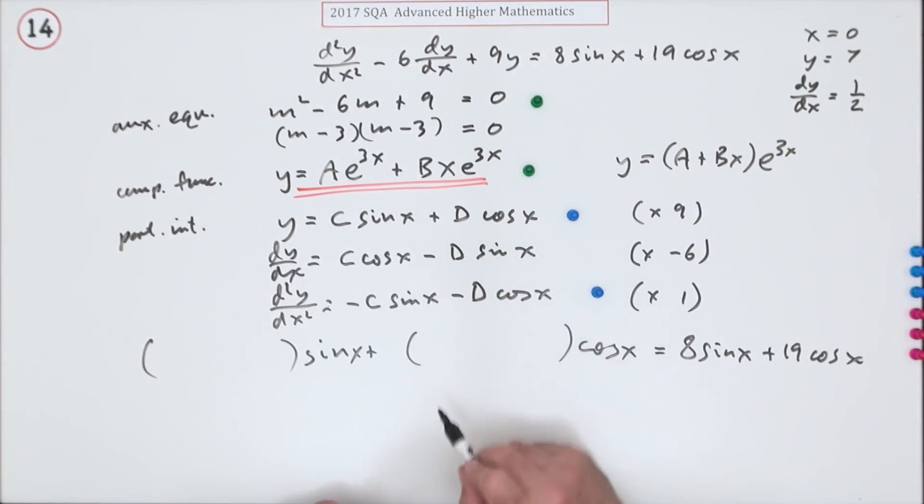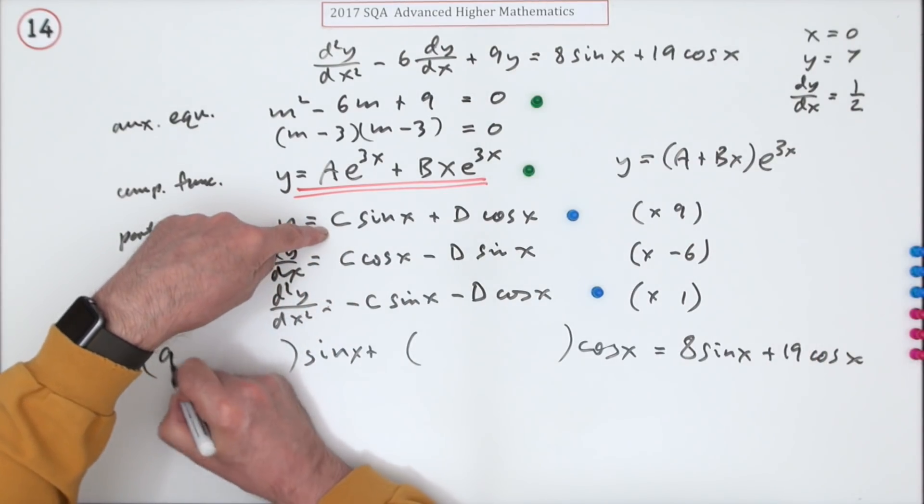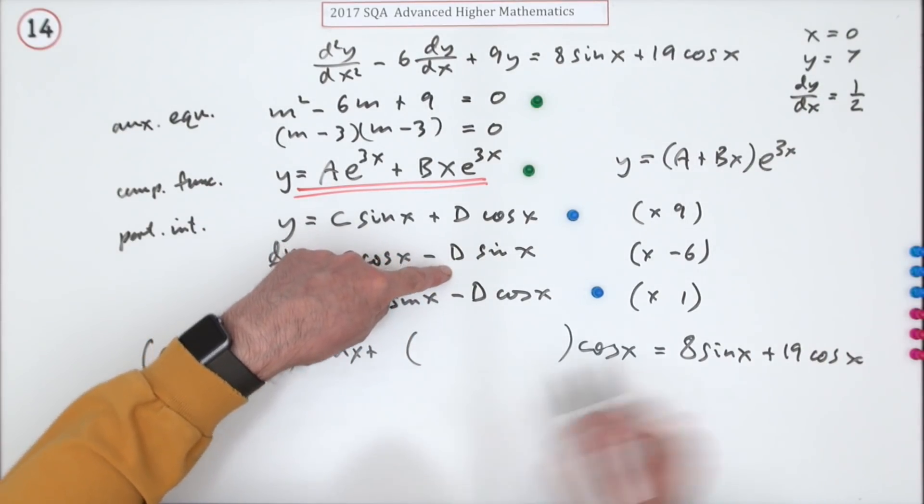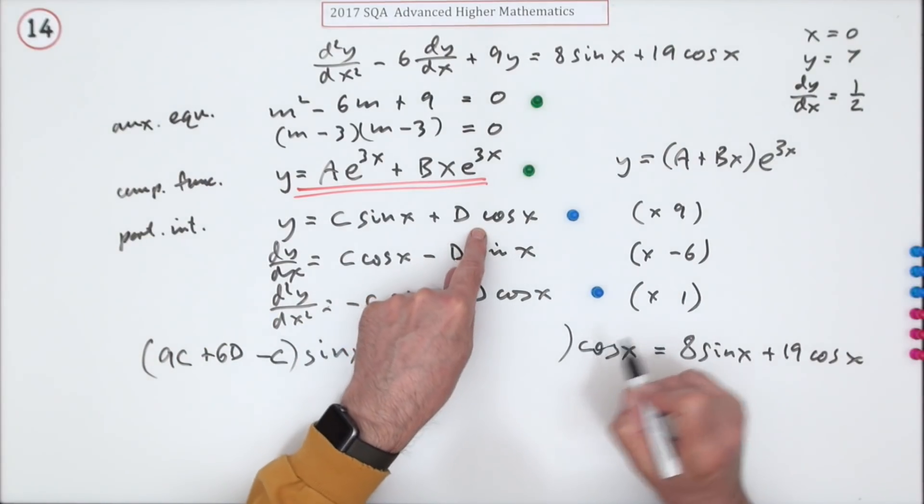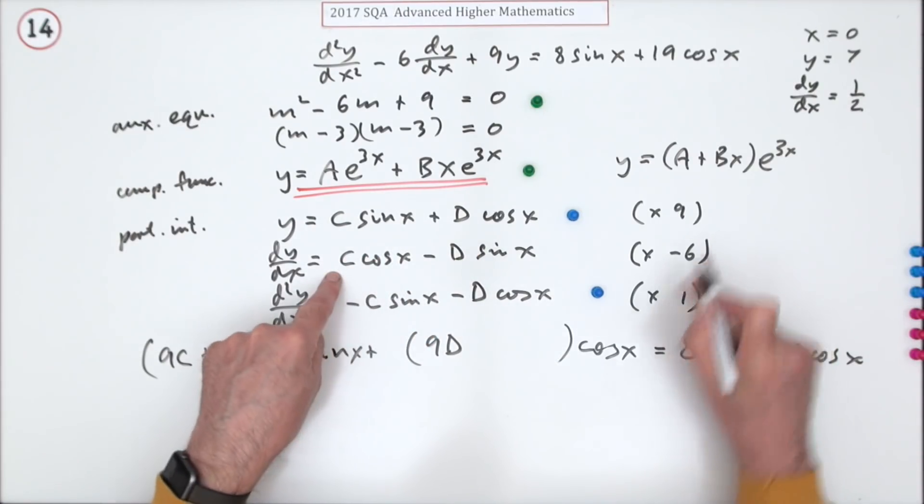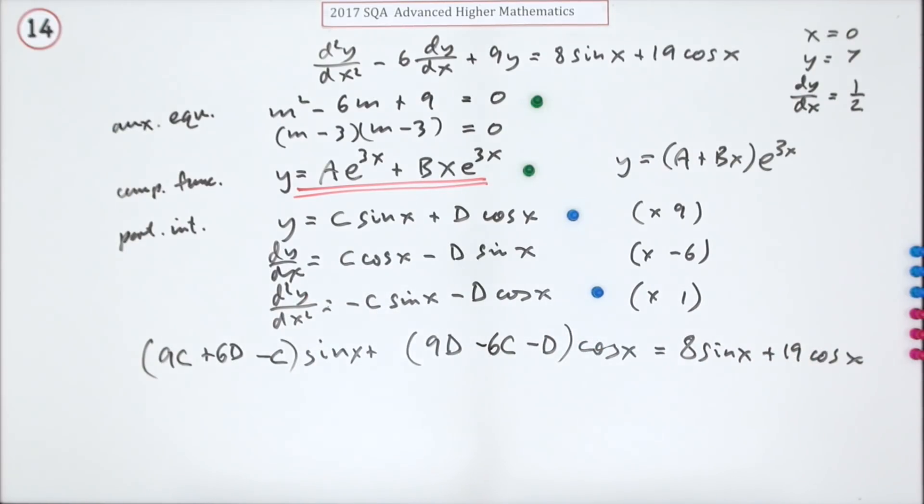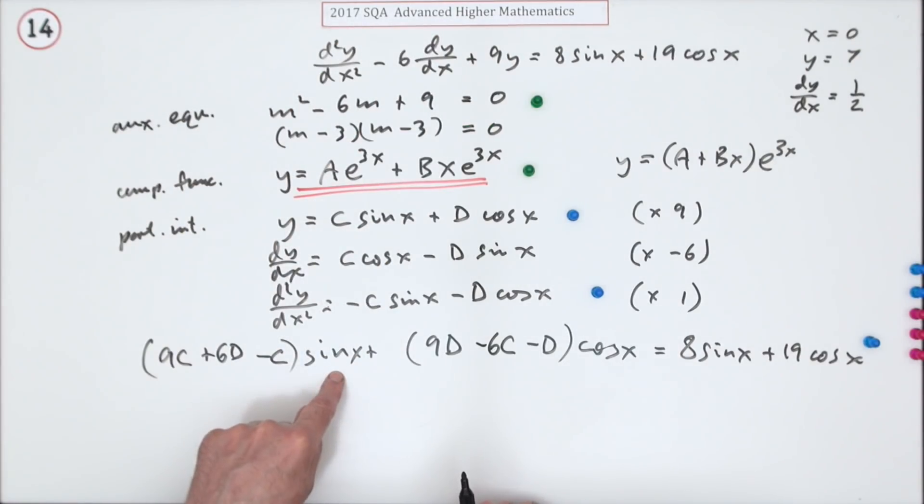So sin x, just going through it - for sin x what have we got? We've got 9C here, we've got minus minus that's plus 6D, and here we've got back to minus C. Cos terms: I've got 9D here, I've got for cos minus 6C, and here I've got for cos minus D. I'm going to count that as feeding it in because that's what it is - I fed it in and tidied it up a bit. I took these three parts, put them into here and separated out the sines and the cosines.